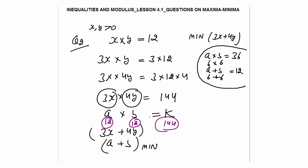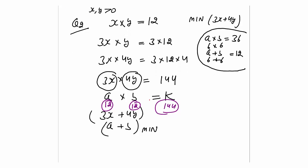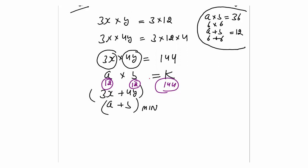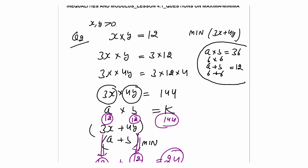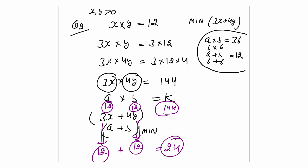The value of 3x equals 12 and 4y also equals 12. So 12 + 12 = 24, which is the minimum value of 3x + 4y.